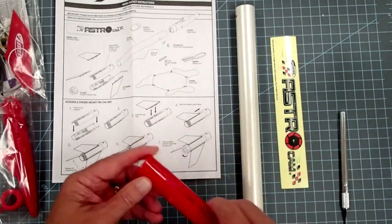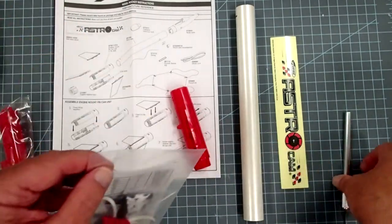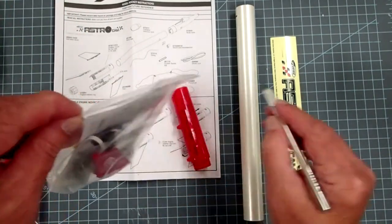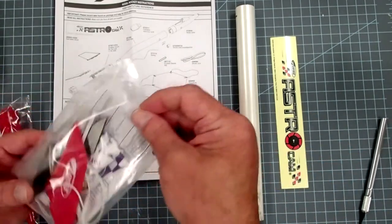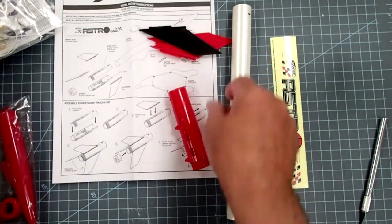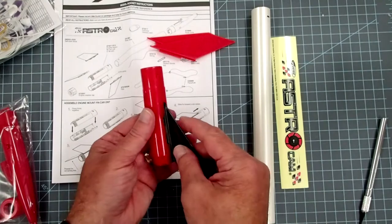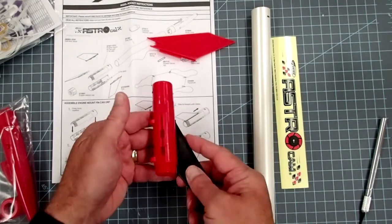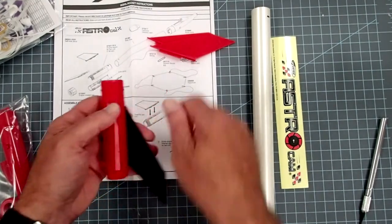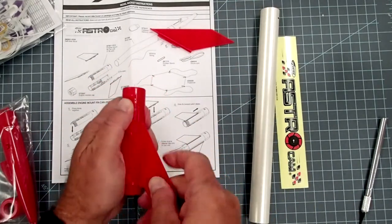Once this is together, we can open up the fins. And there are two red fins and one black. And each of these simply pushes into the slot here, and then it is pushed forward. And we just repeat this for each fin. It doesn't matter which color goes where.